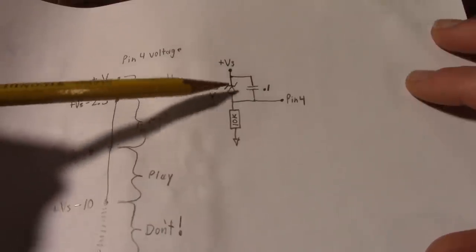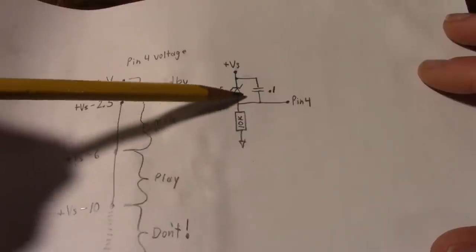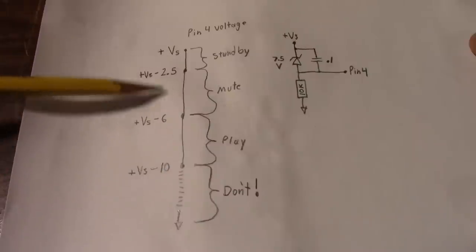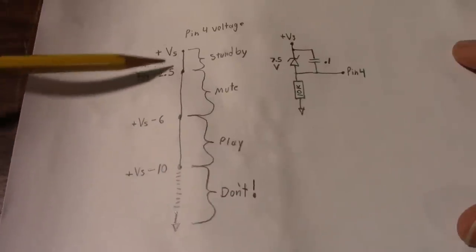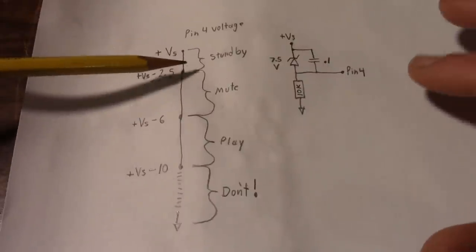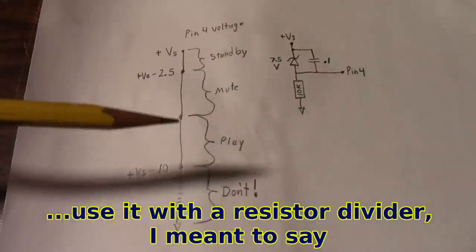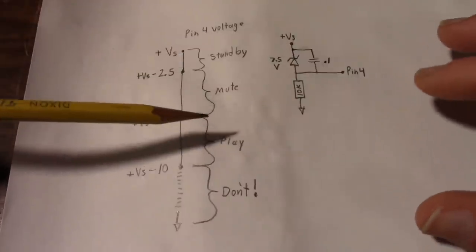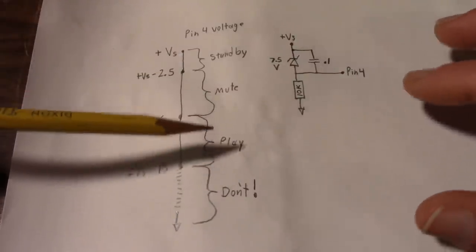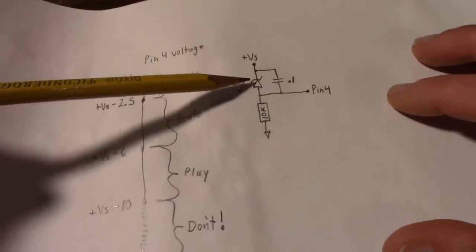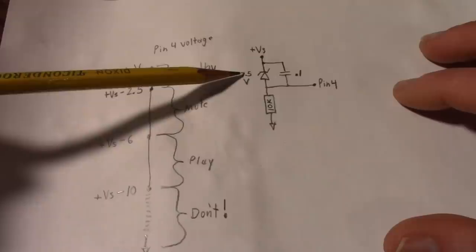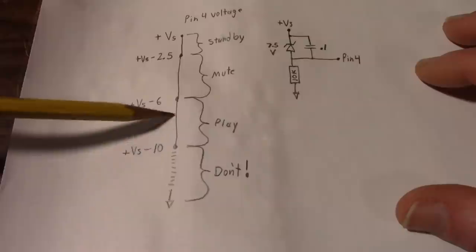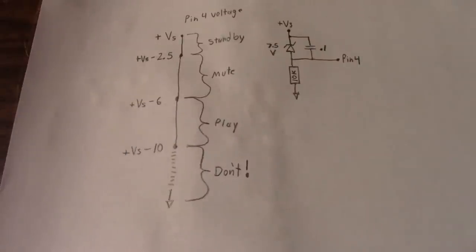One more thing I almost forgot to say is, you could just use a resistor voltage divider. But this is in effect, these voltages, regardless of the power supply voltage that you use. So if you use it with a power supply voltage, and say the amplifier draws heavy current, you're playing music loud through 4 ohm speakers, it pulls the voltage down, it could shift the voltage on that pin into another state. That's why I recommend the zener diode, because it's always going to have that voltage at supply voltage minus 7.5 volts, which is right here in the play region. And we all love to play, right?